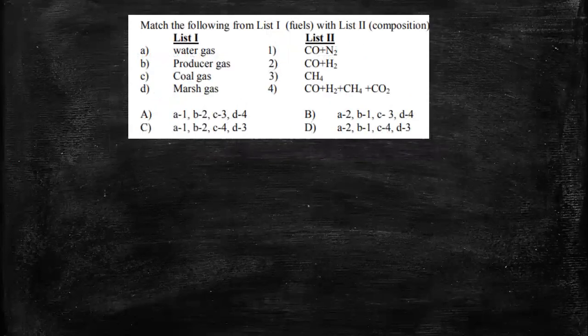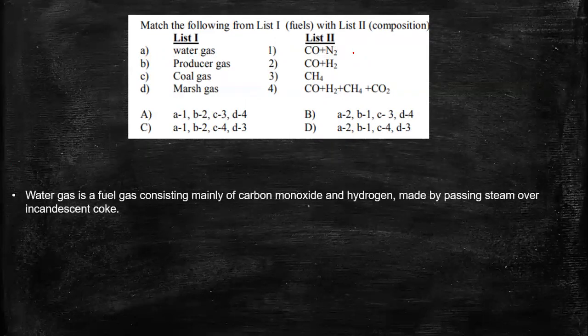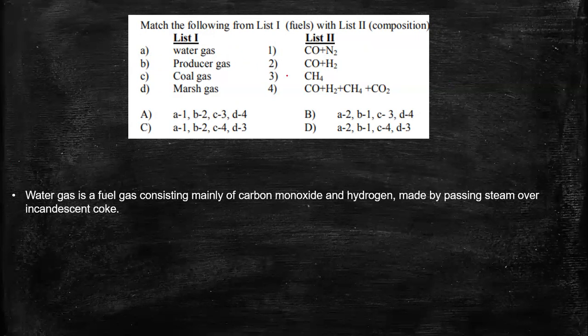Now this is the last question that we are going to deal with today. We have to match the following fuels and their combinations. This is a very common kind of question asked in many MSC entrances as well. Water gas is mainly carbon monoxide and hydrogen and this is made by passing steam over incandescent coke. So it is carbon monoxide and hydrogen. So we know A is 2.